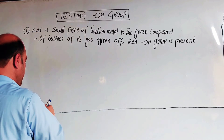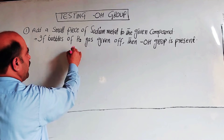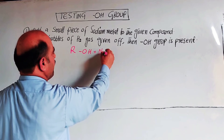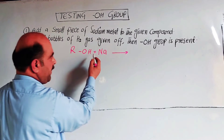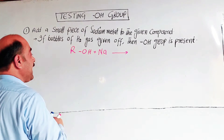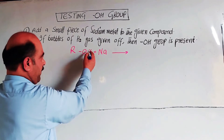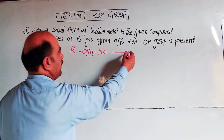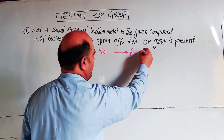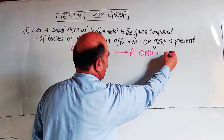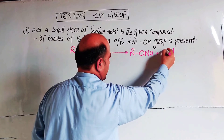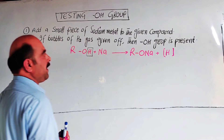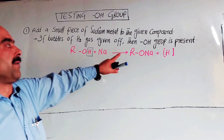The general formula for alcohol is ROH. Sodium is more reactive than hydrogen and can replace hydrogen from its position. So ROH plus sodium gives sodium alkoxide (RONa) and hydrogen gas is given off.